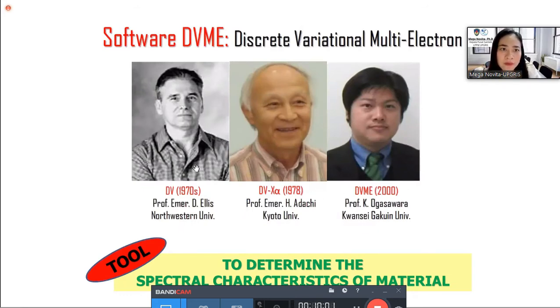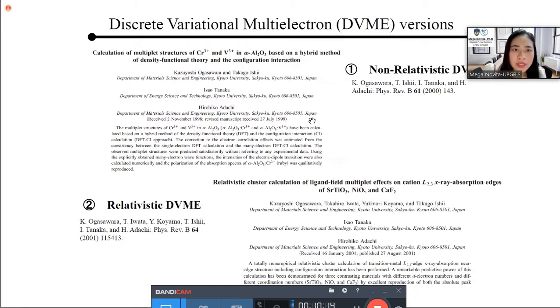So, in brief, the software DVME discrete variational multi-electron is pictured here, and this is very useful to determine the spectral characteristic of material. Then, the discrete variational multi-electron DVME versions. There are two, for the non-relativistic and the relativistic one. For analyzing the transition metal ions, we use non-relativistic one, but for rare earth ion, usually we use a relativistic version, because in the transition metal ions, the relativistic effect is not so influenced, so can be neglected.